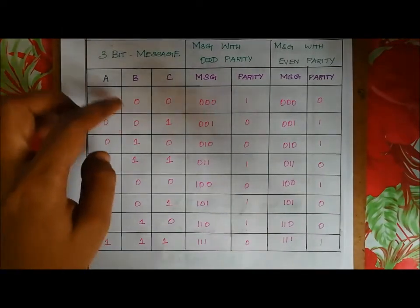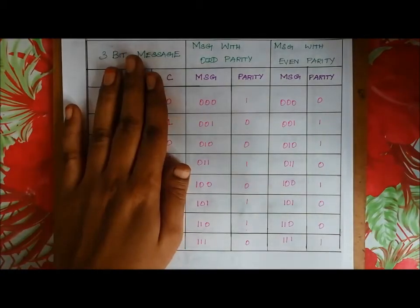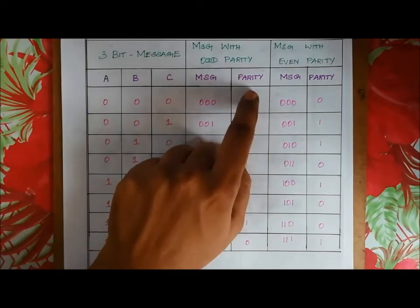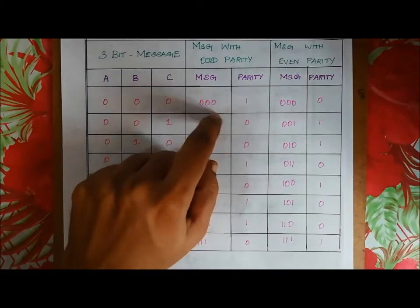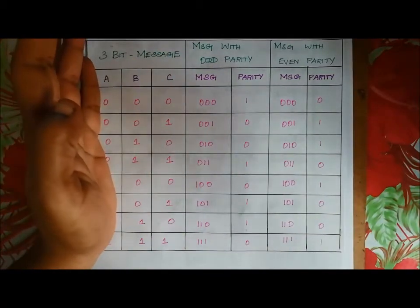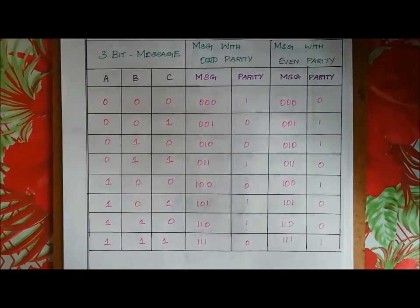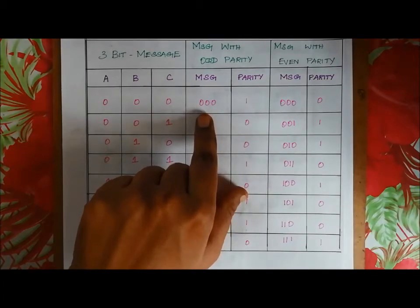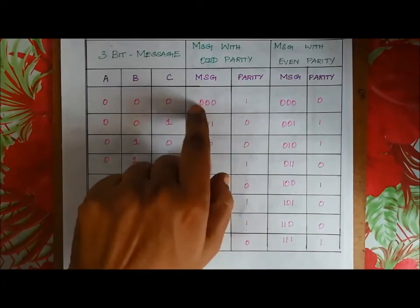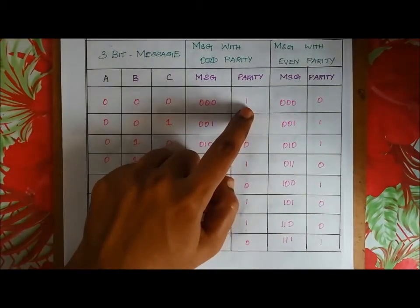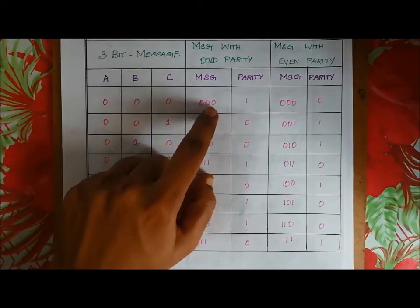This is the ABC message — the data we send. For triple 0 using odd parity: we need the total number of 1s to be odd. When we add the parity bit 1, the total number of 1s becomes 1, which is odd. So we add parity bit 1. The code sent is 0 0 0 1.